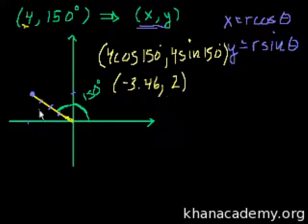Calculating: 4 cosine 150 degrees gives us negative 3.46 for the x-coordinate. And 4 sine 150 gives us 2 for the y-coordinate. So we have the point at negative 3.46, 2.